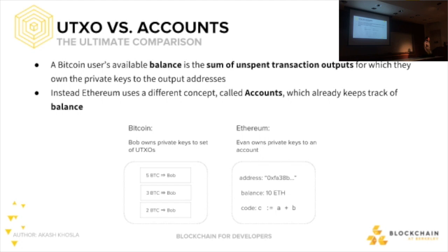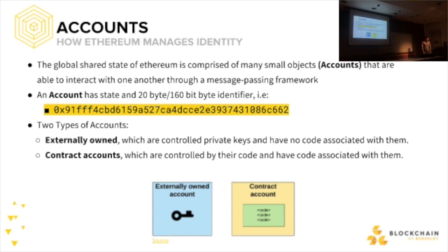Let's talk about accounts. A Bitcoin user's balance is the sum of UTXOs which they own the private keys to — just a bunch of different unspent transaction outputs from previous transactions that happened on-chain. It's a little weird to think about, but if you go through a block explorer and click through things, it starts to make sense how money gets divided up. Ethereum, on the other hand, uses accounts which already keep track of the balance — there's a field literally for balance, so no need to deal with all the complicated mess of UTXOs.